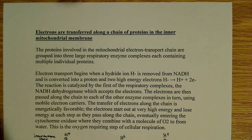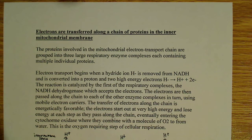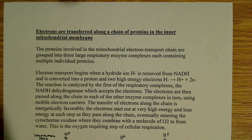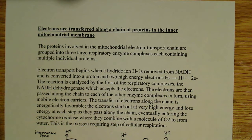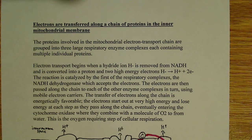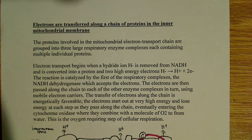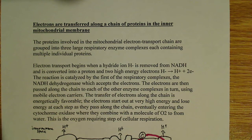Oxygen — this is where all the oxygen that you inhale goes to use. It goes to use as the final electron acceptor in the electron transport chain. The proteins involved in the mitochondrial electron transport chain are grouped into three large respiratory enzyme complexes, and each contains multiple individual proteins.